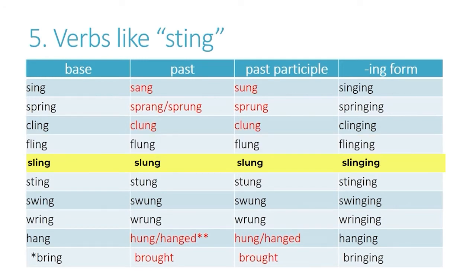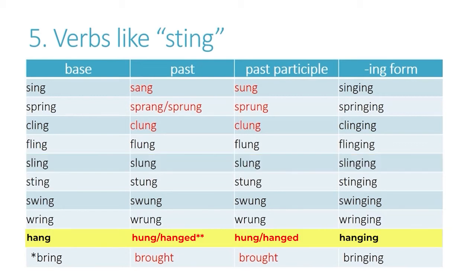When we get to the verb 'hang,' this is a special case which depends on the meaning of the verb. For example, if we're talking about hanging up our clothes or hanging a picture, you would say 'hang, hung, hung.' But if you're talking about hanging a person in order to execute them, the verb 'hanged' is used — the regular form — instead of 'hung.'